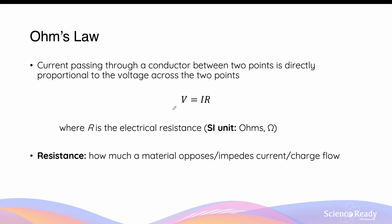Ohm's law can be summarized by the equation: voltage equals current multiplied by resistance, V = IR. R here is specifically the electrical resistance of the material and has the SI unit of ohms, often represented by the Greek symbol omega. Electrical resistance is a numerical value describing how much a material opposes or impedes the flow of charges or current.